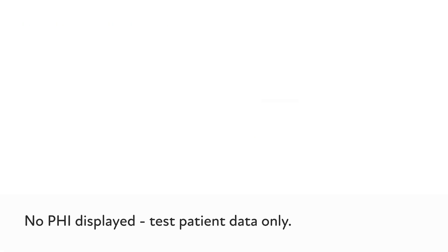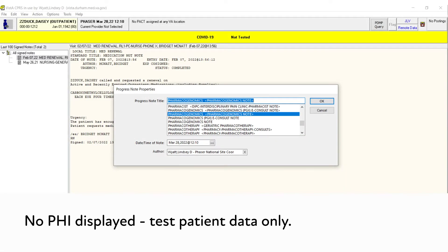Based on VA policies, documentation of oral consent is required for PGX testing. Therefore, the order for the PGX test is only available through a reminder dialog that facilitates documentation of oral informed consent.